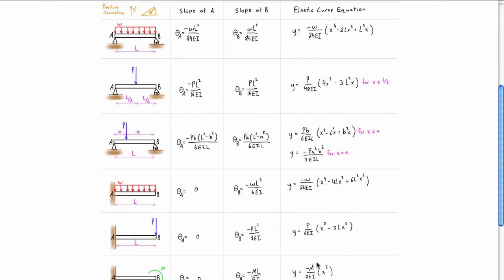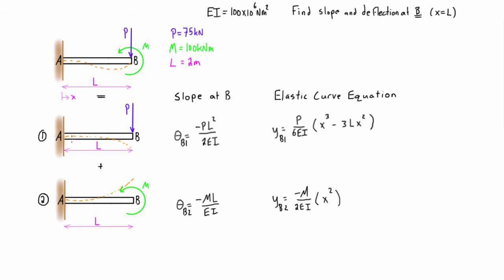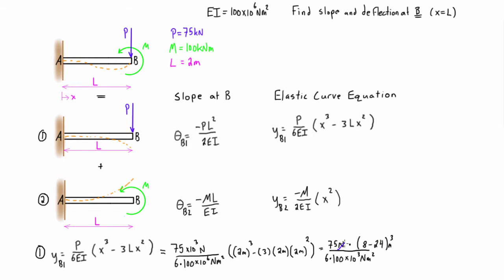Let's go and grab these and bring them into the video. These are the slopes at B, and these expressions are the elastic curve equations. Let's calculate the deflection in system one first. When we get to this step, let's just check that the units cancel.